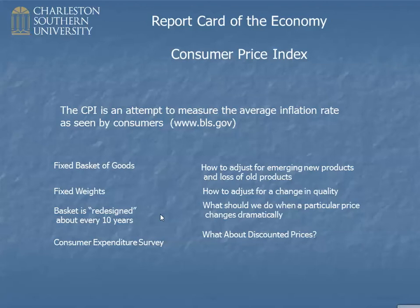Another problem is discount prices, especially in areas like college tuition or hospital care. There's the list price and then the price you actually pay. When tracking college tuition — say at Charleston Southern University — should the index use the list price or the discounted price many students receive? Similarly at the hospital, should it be the list price or what the insurance company actually paid?